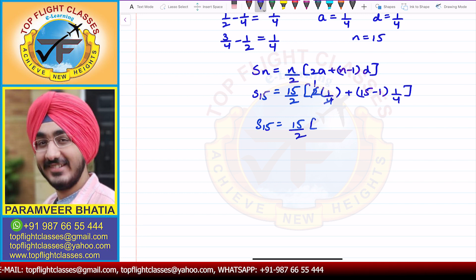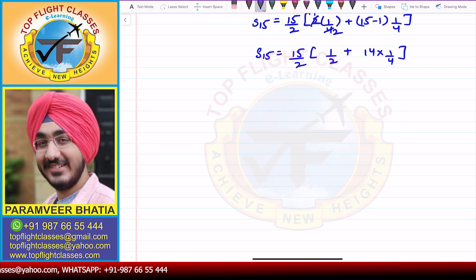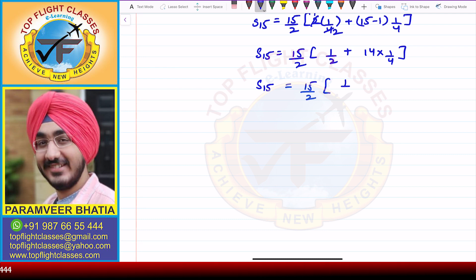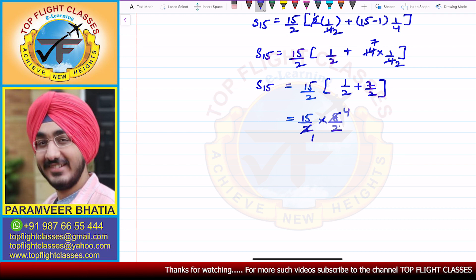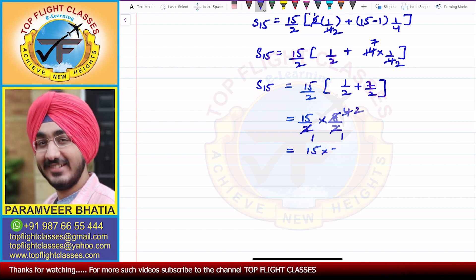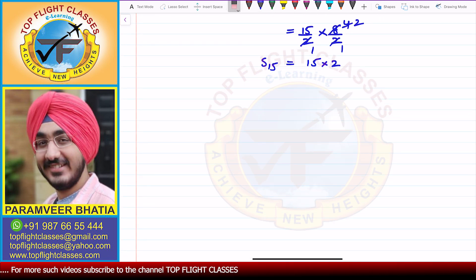Calculating: 2 × 1/4 = 1/2, and 14 × 1/4 = 14/4 = 7/2. So S₁₅ = 15/2 × [1/2 + 7/2] = 15/2 × [8/2] = 15/2 × 4 = 15 × 2 = 30. The sum of the first 15 terms comes out to be 30.